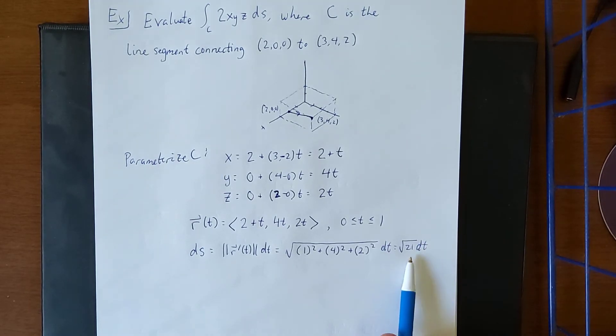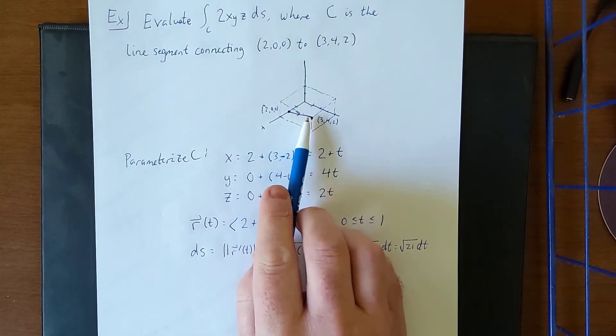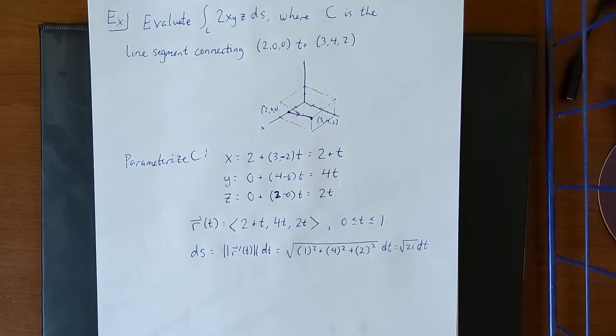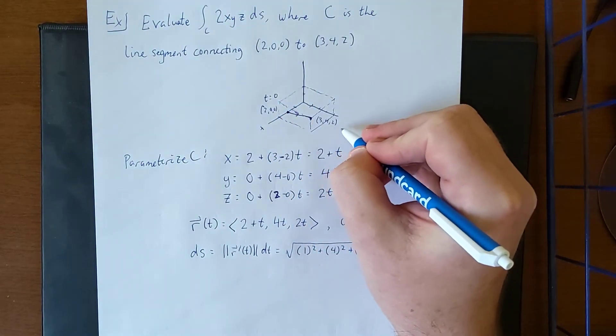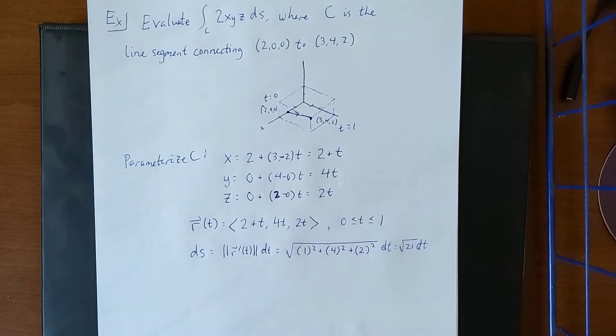Now the significance of this √21 is that we just described the length of the line segment connecting these two points. The reason that we need the entire length is because this is going to be over the course of exactly one unit in terms of t.